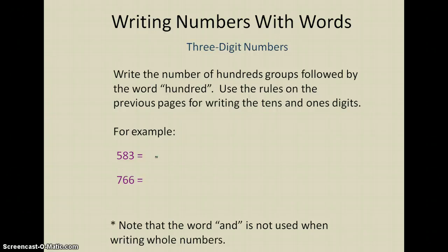For example, for this number I would say 583, so I would write 500 and then 83, and again I'm going to use a hyphen here because 83 is a number between 21 and 99. I'm always going to put a hyphen in between the two parts of those numbers.